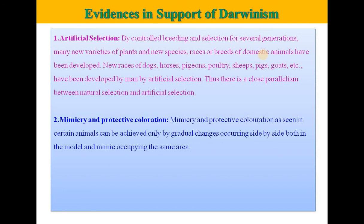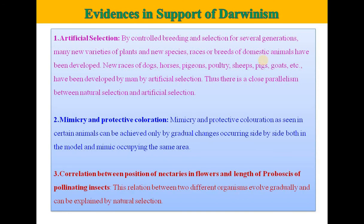The second evidence is mimicry and protective coloration. Mimicry and protective coloration as seen in certain animals can be achieved only by gradual changes occurring side by side in both the model and mimic occupying the same area. The third evidence is the correlation between the position of nectaries in flowers and the length of the proboscis of pollinating insects. This relation between two different organisms evolves gradually and can be explained by natural selection.